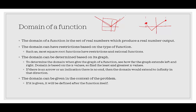The domain can also be given in the context of the problem. For example, you might be given f of x equals x squared, and then it might say negative 2 is less than or equal to x is less than or equal to 2. This is defining the domain — it's telling you we're only looking at this function f of x equals x squared within the bounds of negative 2 to 2.